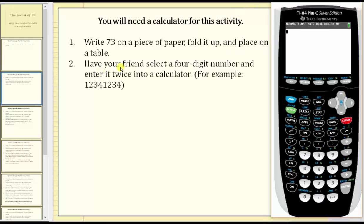Step two, have your friend select a four-digit number and enter it twice into a calculator. An example would be 1234, 1234.